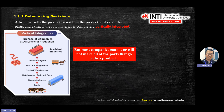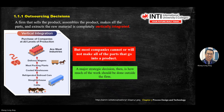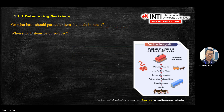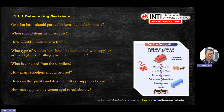Most companies cannot make all the parts that go into a product, so they need a strategy to reduce workload. For example, they sign a contract with a farmer who supplies cattle, sent to a slaughterhouse, then to a logistics partner, then to the packing plant, and finally to the end user. This is an outsourcing decision.